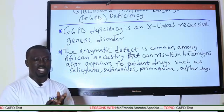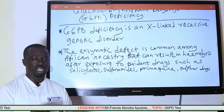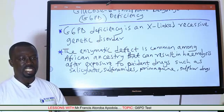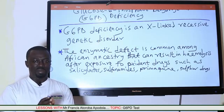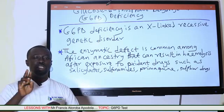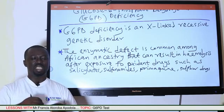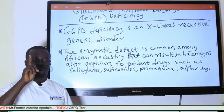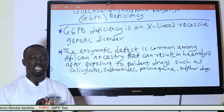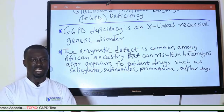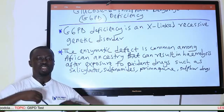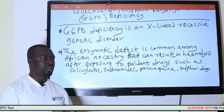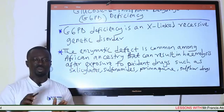Supposing that it was not recessive but dominant inheritance — dominant inheritance means that we do not need two copies of the abnormal gene for the disease to be expressed. Only one copy of the abnormal gene is required for the disease to occur in dominant inheritance. But in this case, we are dealing with recessive inheritance.